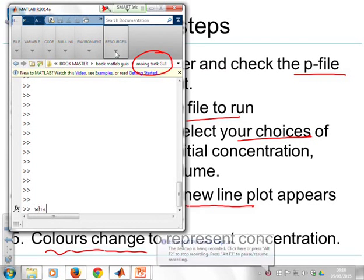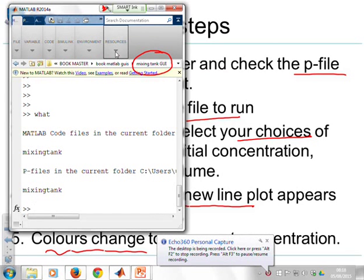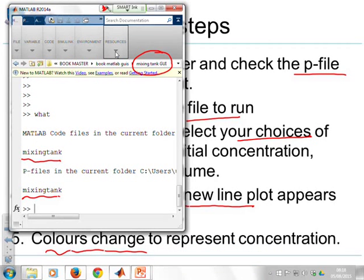So if I now type what, you'll see I've got a fig file, mixing-tank.fig and an m-file, mixing-tank. In fact, I've called it a p-file here instead of an m-file.